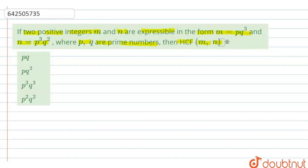then HCF of M and N is: PQ, PQ square, P cubed Q cubed, or P square Q square.